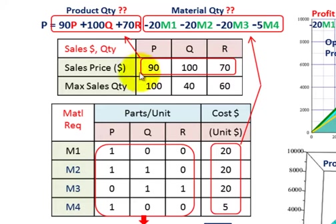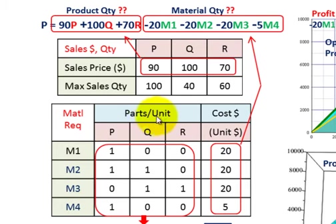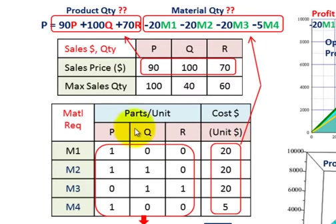The next thing we're going to look at is material quantities. We've got four different materials, M1 through M4, and we'll look at the parts per unit for products P, Q, and R. We're also going to have a unit cost for each one of those materials that feeds into our objective function.